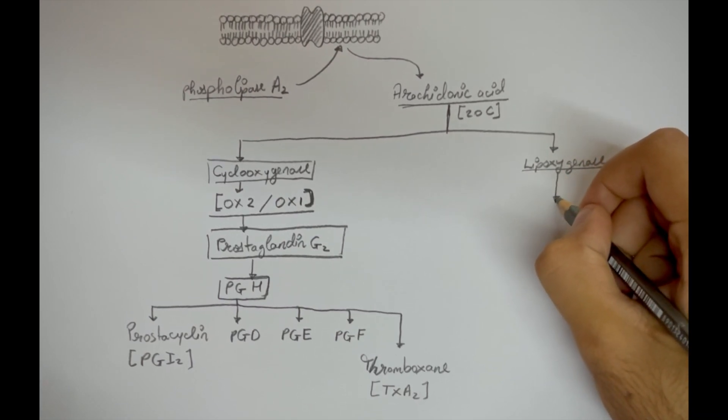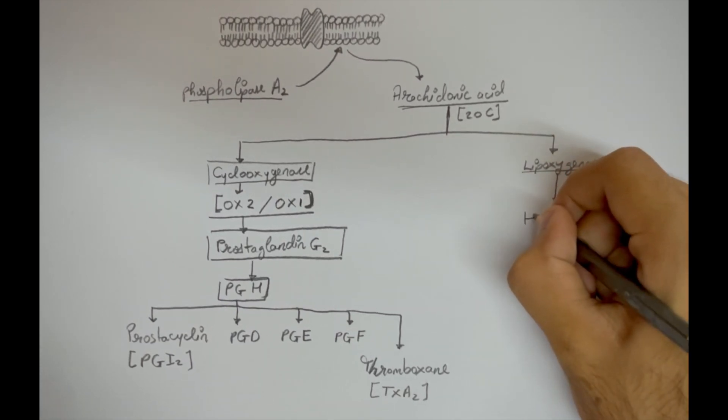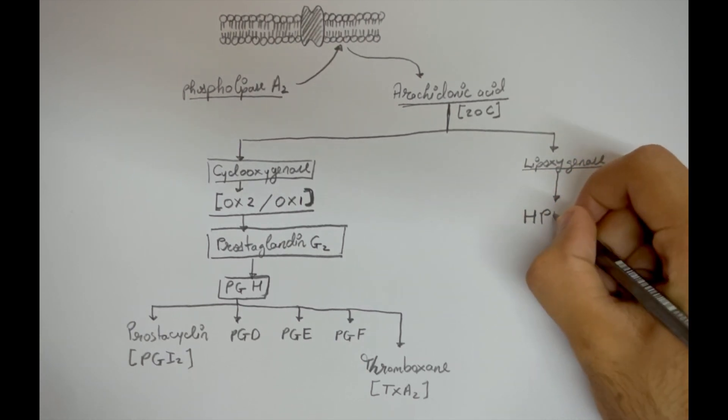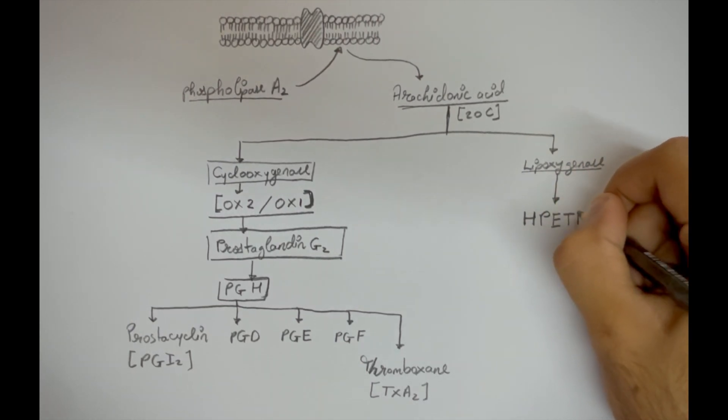Moving on to the lipooxygenase pathway, arachidonic acid is converted into hydroperoxylicosatetraenoic acid.